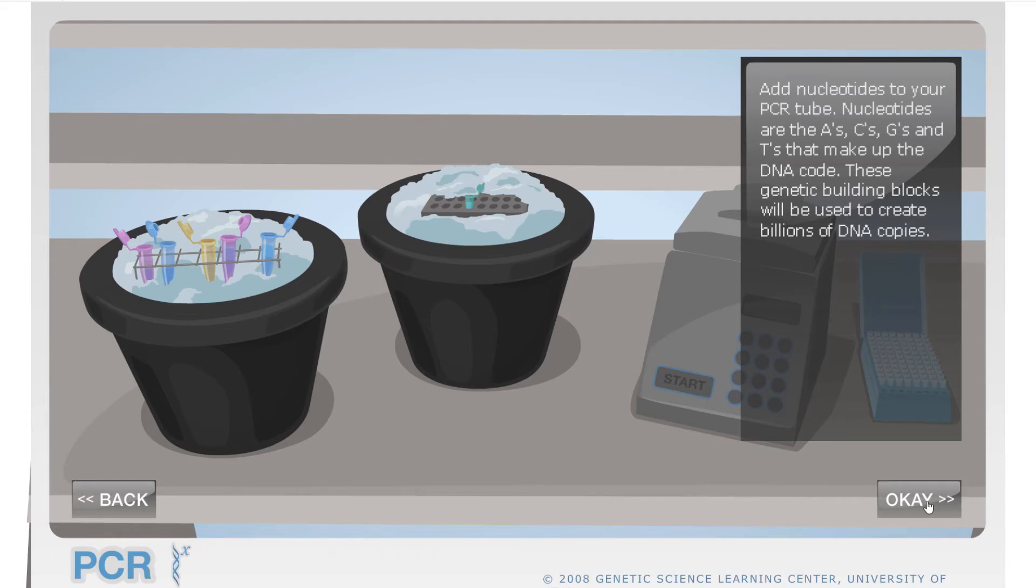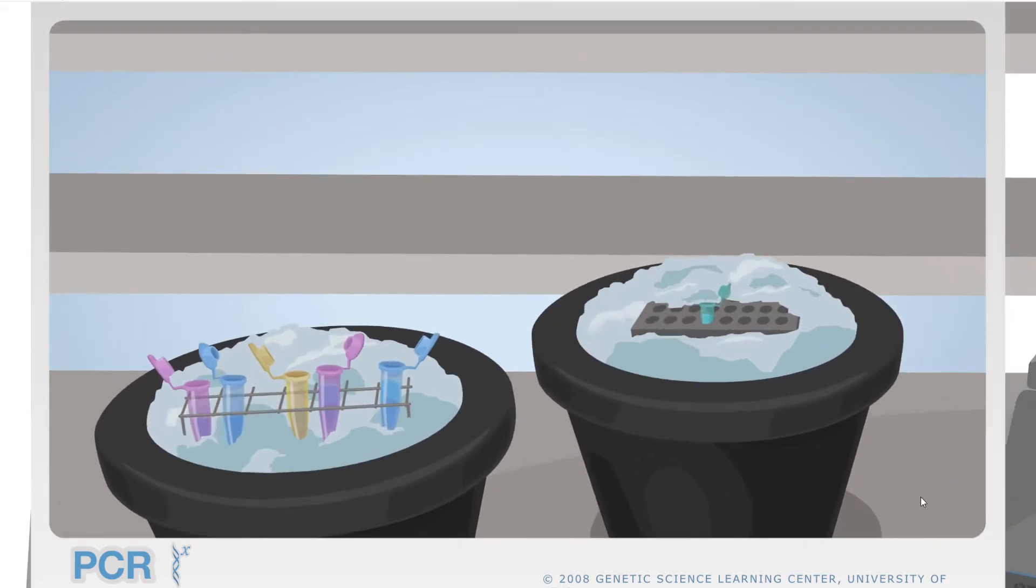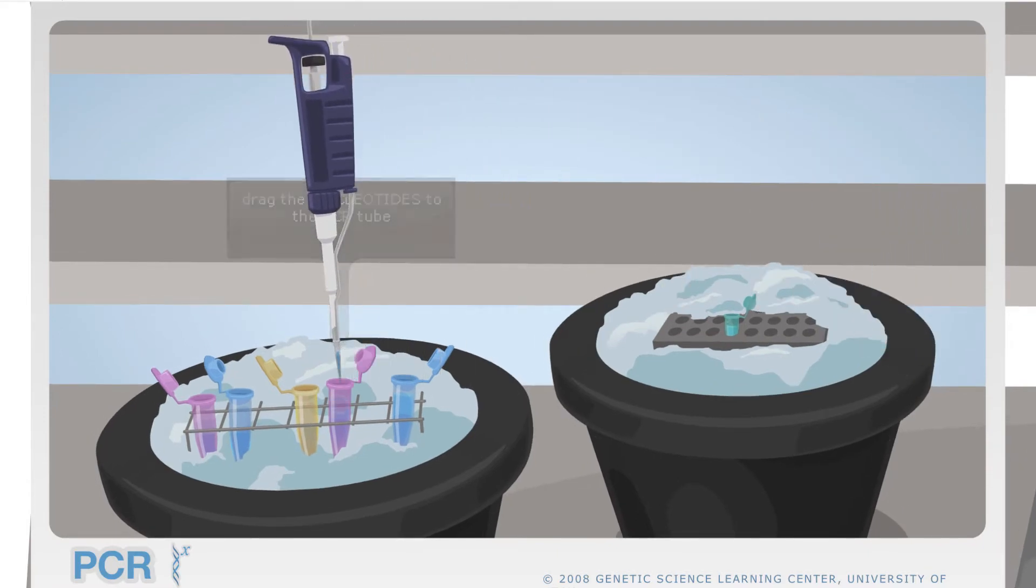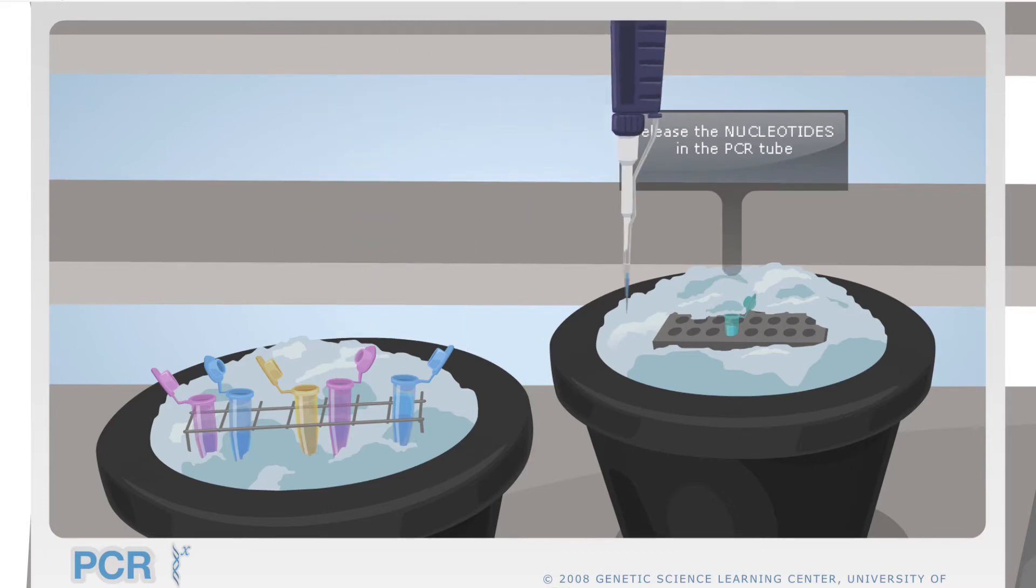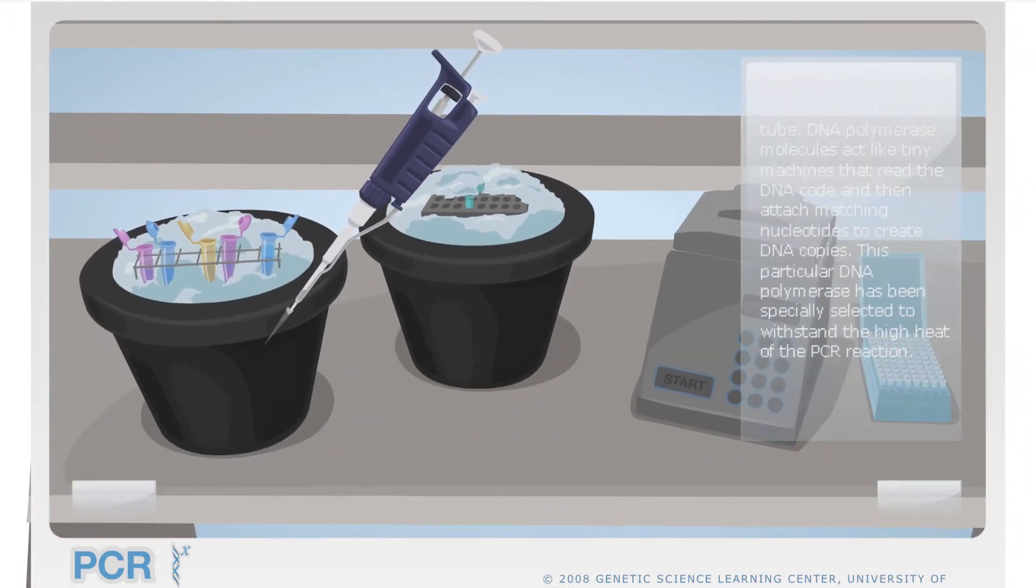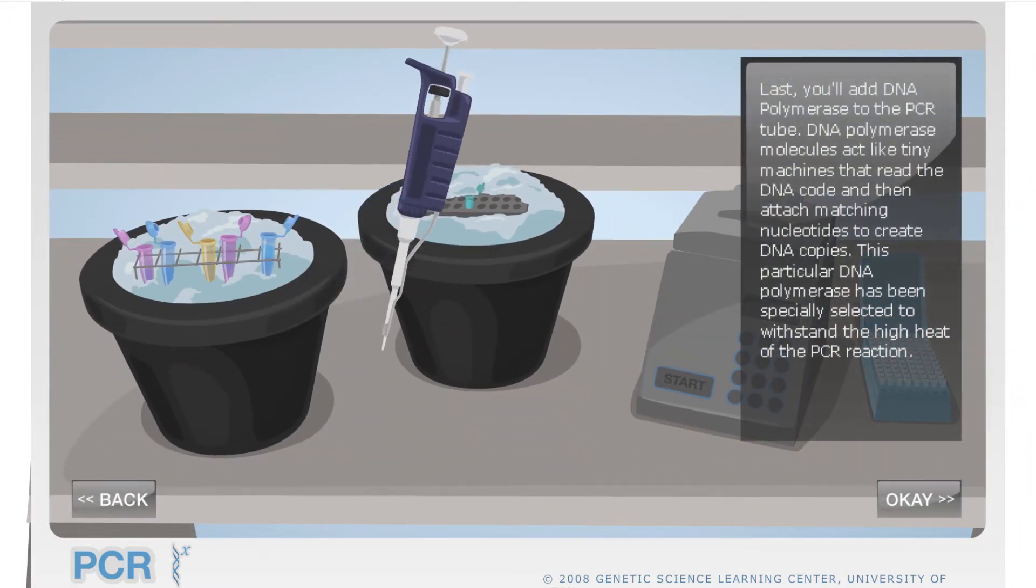Then we add the nucleotides. For DNA, we have four types: adenine, thymine, guanine, and cytosine. We need to add more nucleotides because we need raw materials to replicate our sequence of interest. Remember that we only have a small sample. We need more nucleotides to create new copies of our sequence.